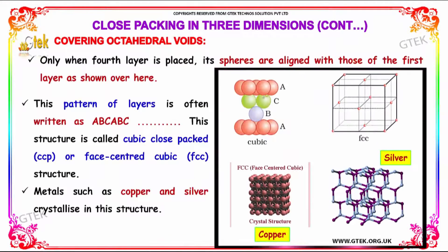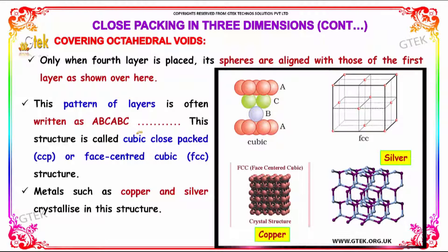Only when the fourth layer is placed are its spheres aligned with those of the first layer. This pattern of layers is written as ABC ABC, repeating. This structure is called the cubic close-packed structure, CCP, or face-centered cubic, FCC structure. Metals such as copper and silver crystallize in this arrangement.